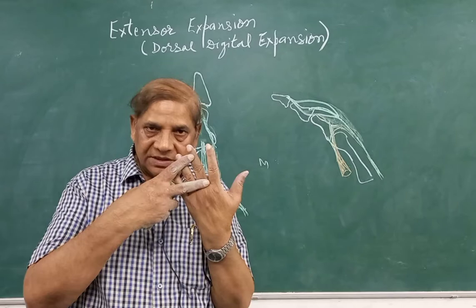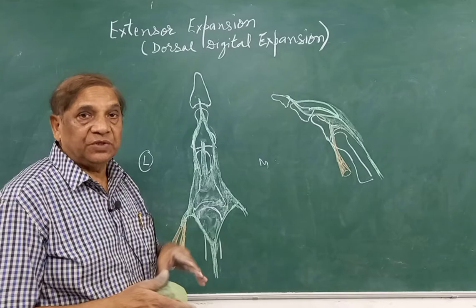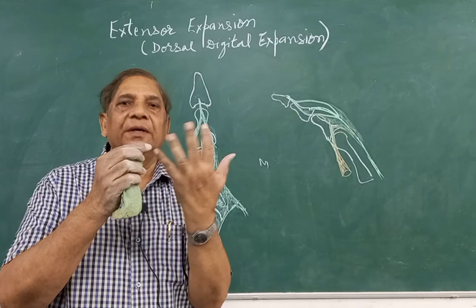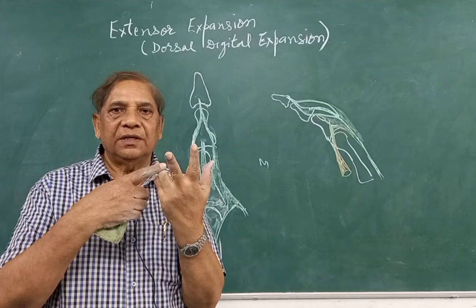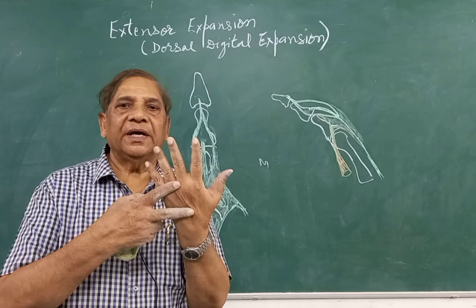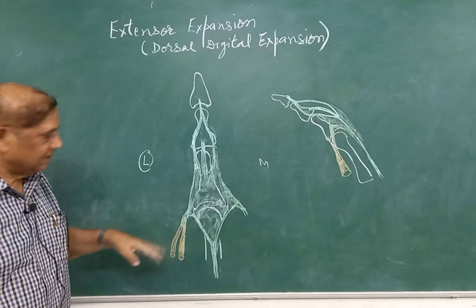This is the extensor compartment with the extensor tendon. The extensor expansion is found in the medial four fingers — that is the little finger, ring finger, middle finger, and the index finger. This expansion is on the dorsal aspect.